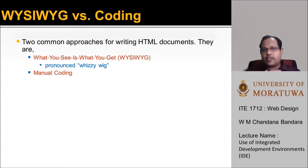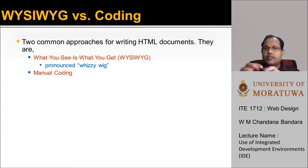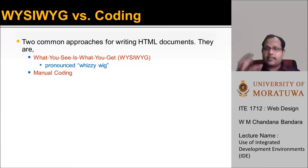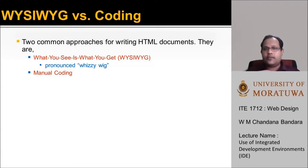In a what-you-see-is-what-you-get type of editor, you will have tools and elements so that you can drag and drop these elements into the window and design your web page, looking directly at the outcome. In short, we call this a WYSIWYG editor.